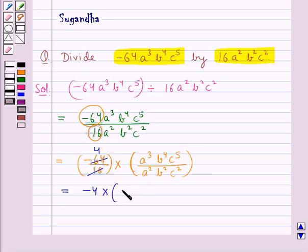a³ by a² would give us a^(3-2) times b^(4-2) times c^(5-2).